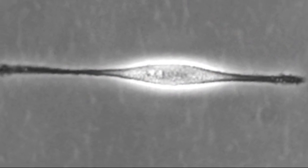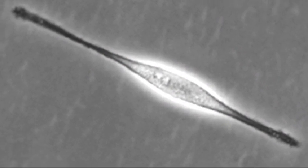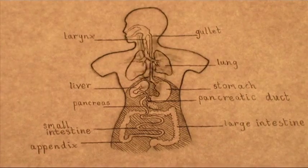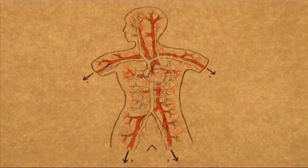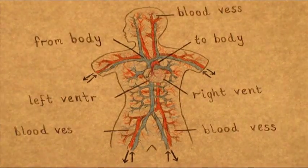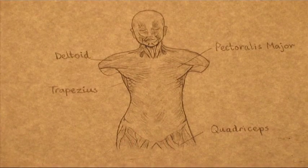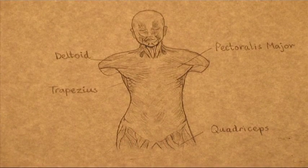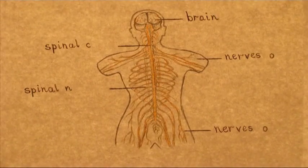These different cell types work in specialised teams. Some carry oxygen through the blood system. Some do the stretching and contracting in our muscles. Some carry messages between our brain and the rest of our body.